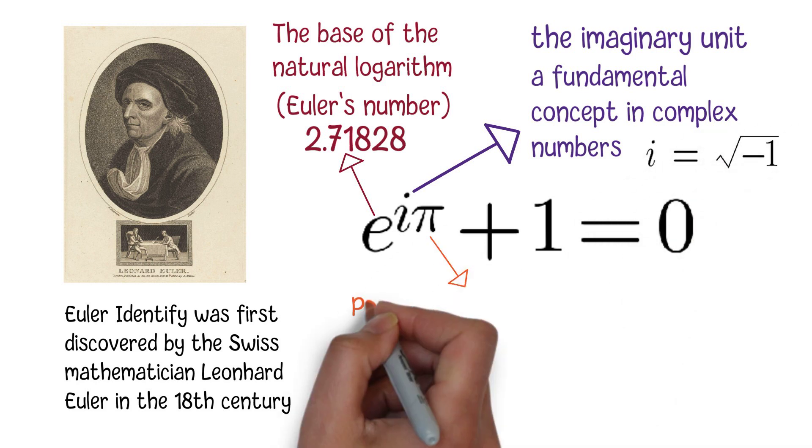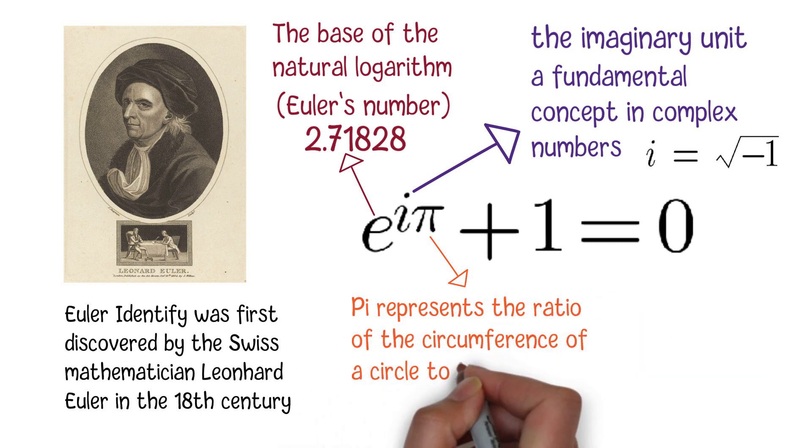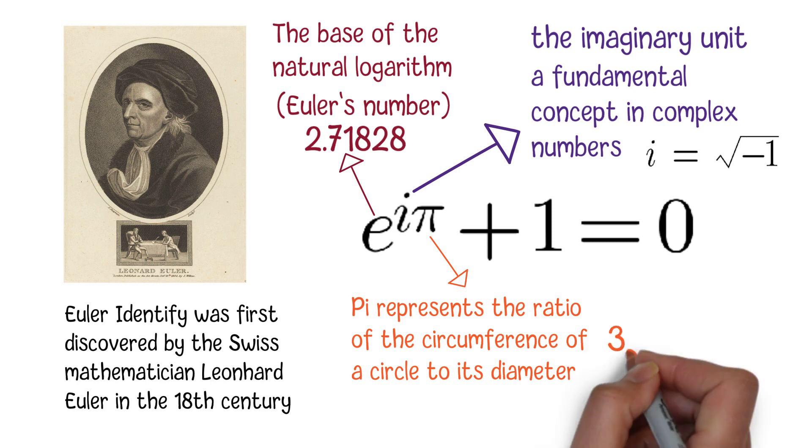Pi represents the ratio of the circumference of a circle to its diameter. It is another irrational number approximately equal to 3.14159.